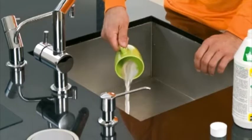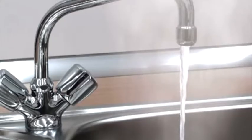Pour 300ml HG Kitchen Drain Unblocker into the drain. Then pour the same quantity of lukewarm water into the drain to activate the unblocker.